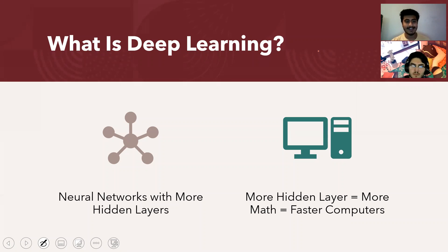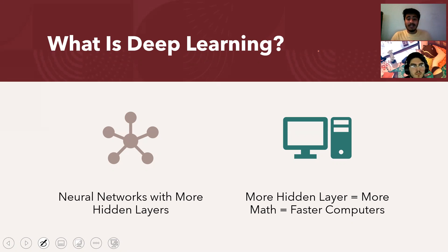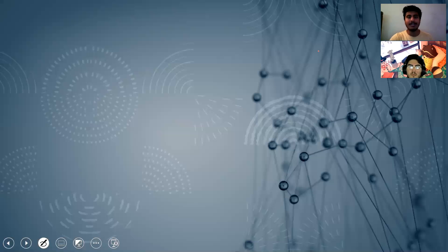What is deep learning? It's simply a neural network with more hidden layers — that's all. Don't get confused: deep learning just means more hidden layers. Why wasn't deep learning done before? Because more hidden layers require more math and computation, and therefore faster computers. Now that computation power has increased, deep learning has become really popular and is a hot topic.